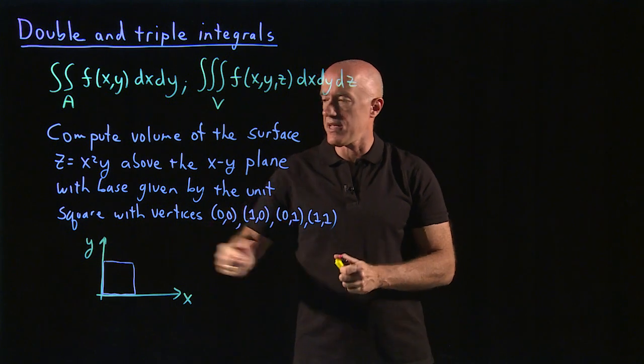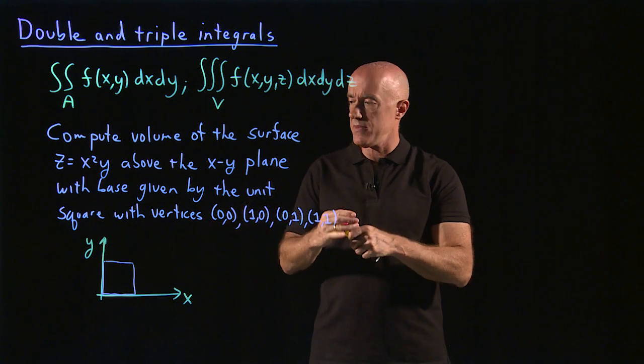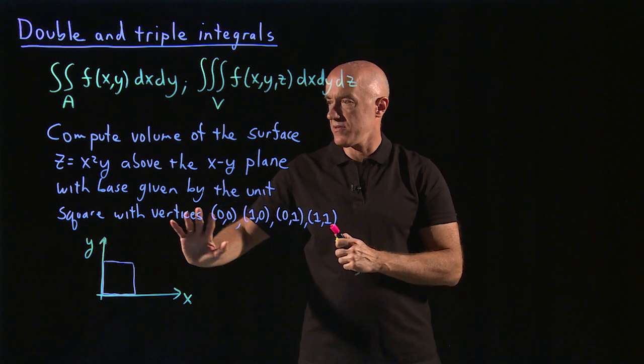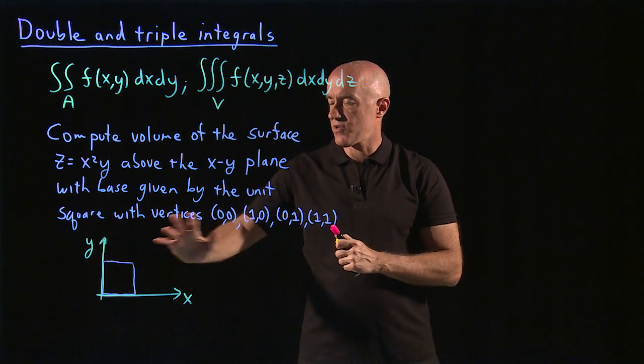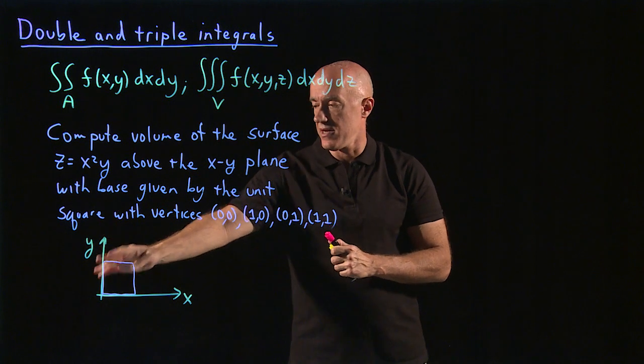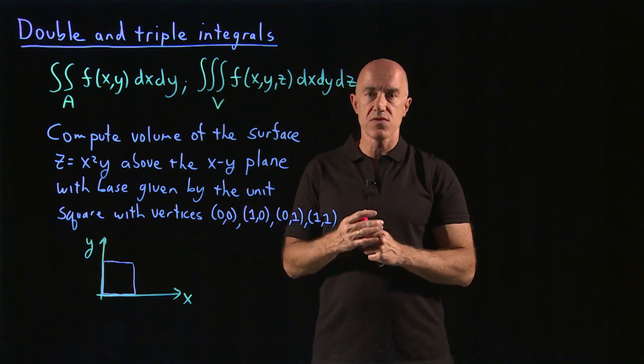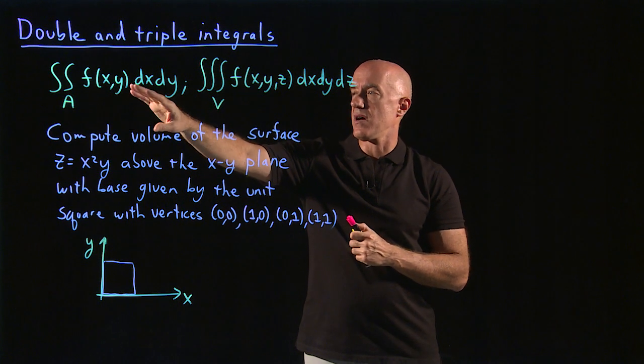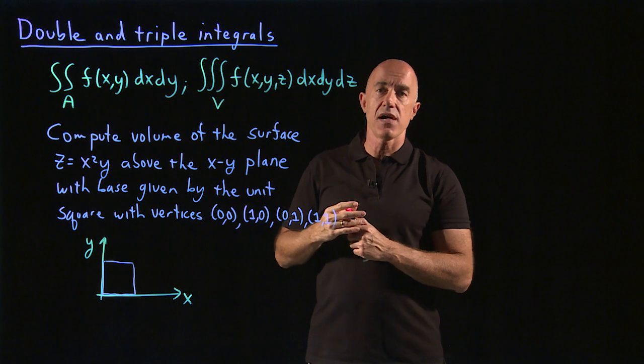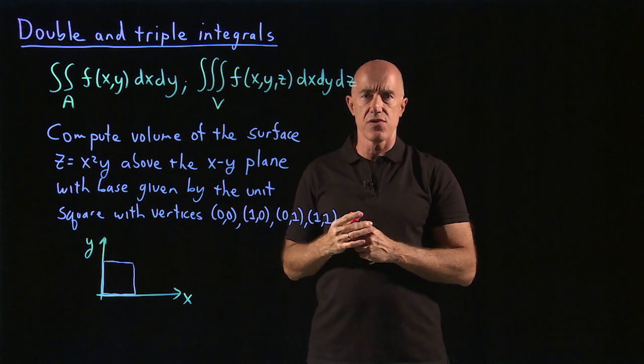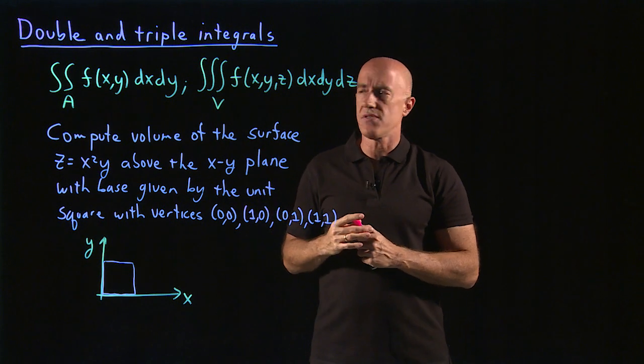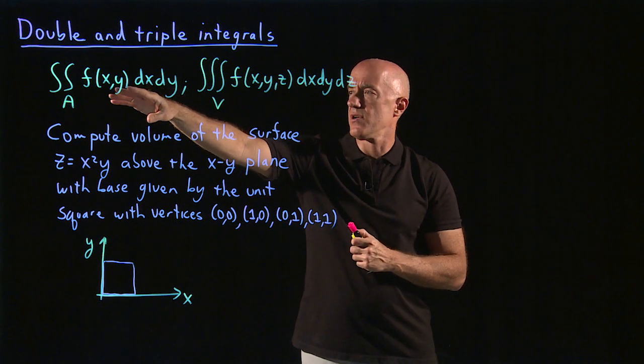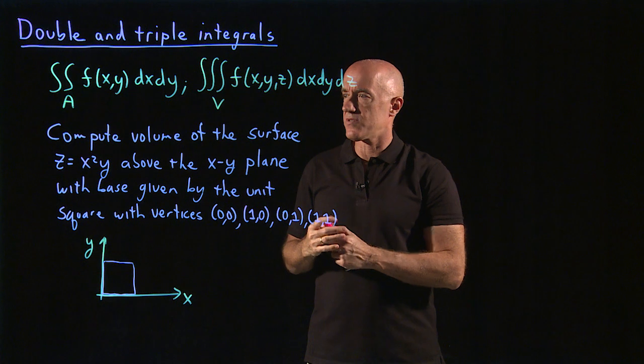And the surface is z equals x squared y. So we want to find essentially what is the volume between the surface x squared y and this square in the xy plane. So a double integral can be interpreted as a volume, just like a single integral is the area under the curve. The double integral is the volume under this function f of xy.